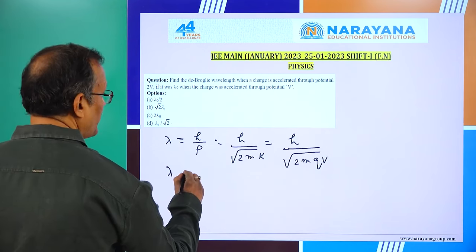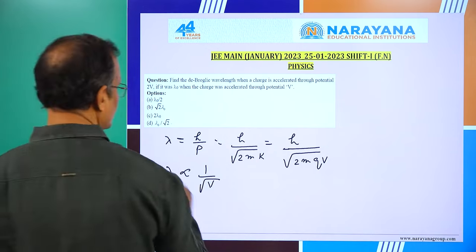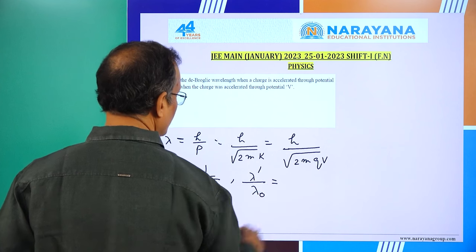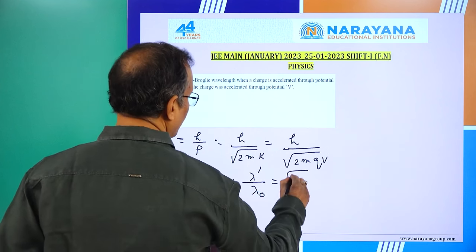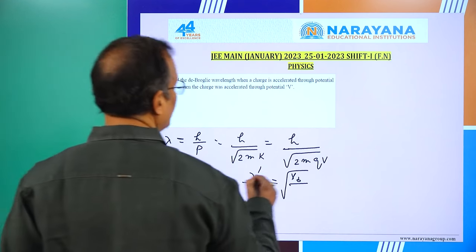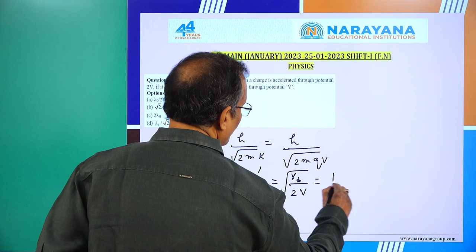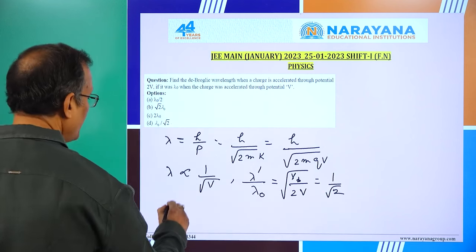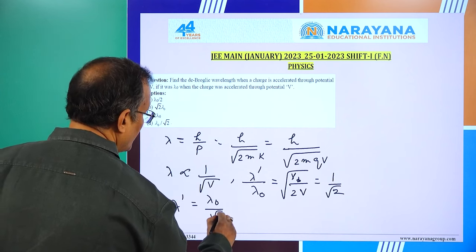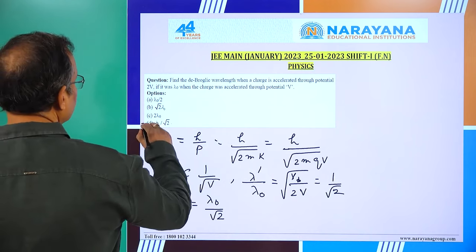From here, lambda is proportional to 1 by root V. So lambda dash by lambda naught equals under root V by 2V, which gives 1 by root 2. Therefore lambda dash equals lambda naught by root 2. The answer is D.